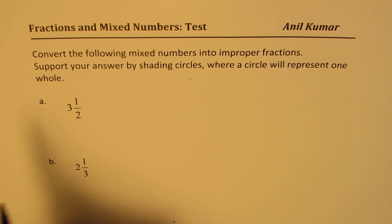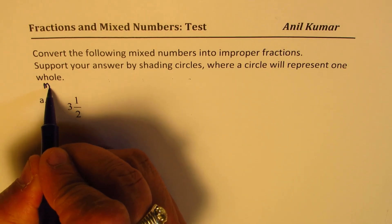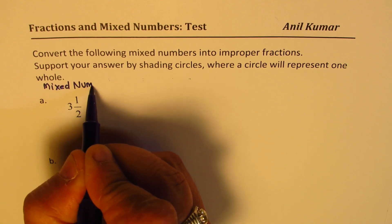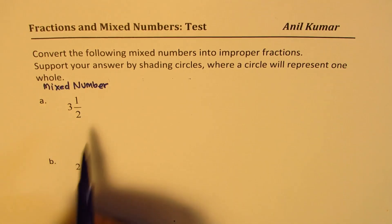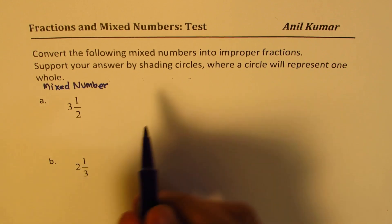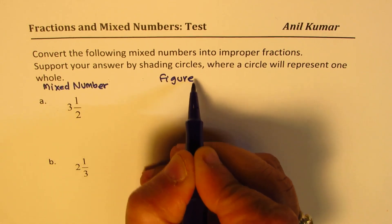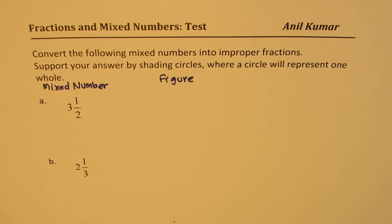The mixed number is given to us. We need to represent this, so let's make a figure for this mixed number. 3½ indicates that we're talking about something which is more than three.